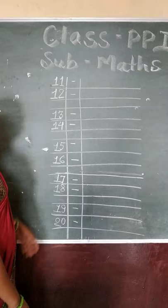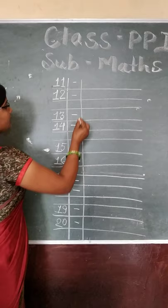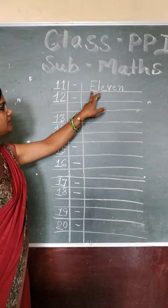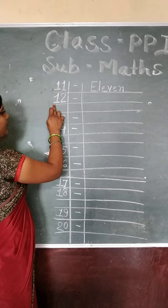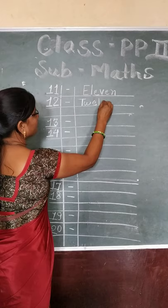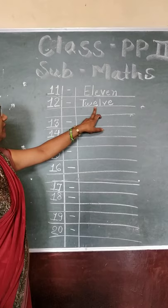Now let's start. Let's see spelling 1 plus 11: 11. Now 12 — E, T, W, E, L, V, E — 12. Ok? 11, 12.